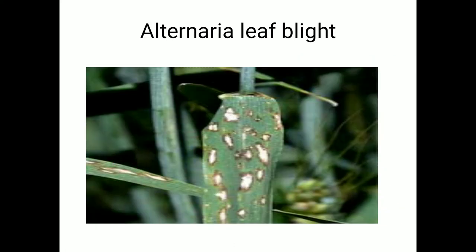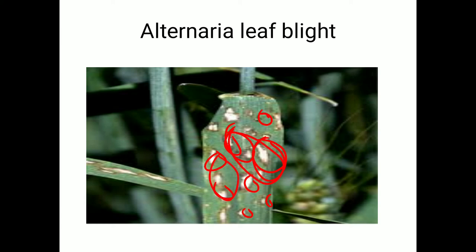The next disease is Alternaria leaf blight, caused by the fungus Alternaria triteciana. When this fungus attacks, it mostly attacks the leaves, causing brown to black whitish small spots on the leaves. When these spots increase in size, they coalesce with each other to form large lesions, due to which the whole plant looks unhealthy and shows a burning appearance.